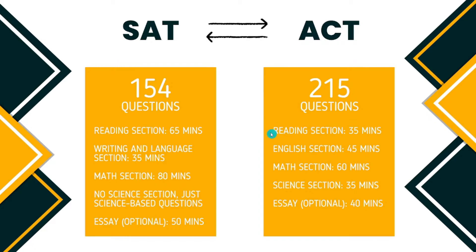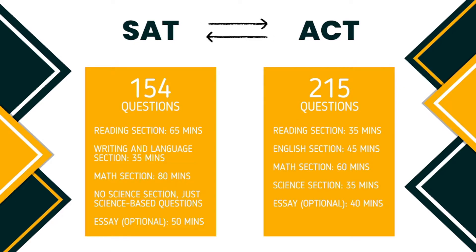The ACT reading section consists of 40 multiple choice questions that need to be answered in 35 minutes. There will be four passages on prose fiction, social studies, humanities, and natural sciences for you to read, and 10 questions to answer per passage about their explicit and implicit meanings.